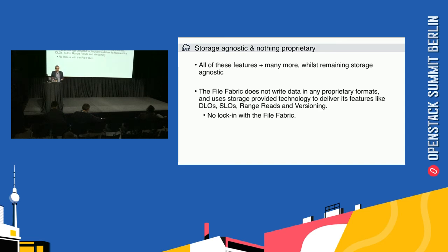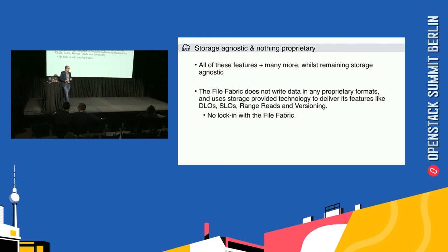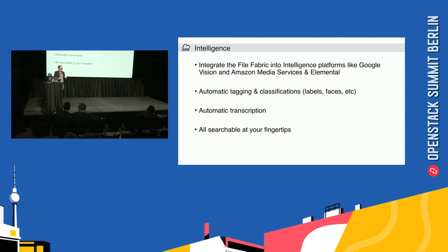The File Fabric is also storage agnostic — because we support a very broad range of clouds, it doesn't matter what we're talking to, we can provide all of this functionality for all different clouds. The File Fabric doesn't write in any proprietary formats, so if you're using Swift, Ceph, or whatever your storage system is, you can still continue to access the storage directly as well as through the File Fabric. There's also built-in intelligence in the platform, where it can integrate into platforms like Google Vision, Amazon Media Services, and Elemental to give you things like automatic tagging and classifications, automatic transcriptions, and all of this is searchable at your fingertips.